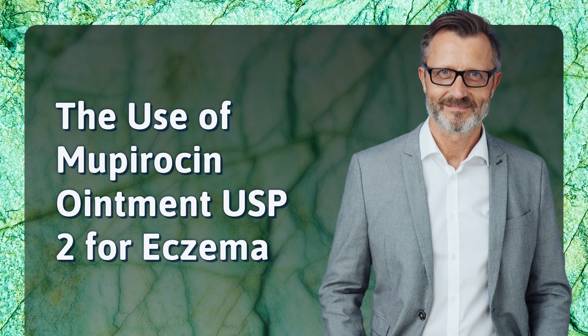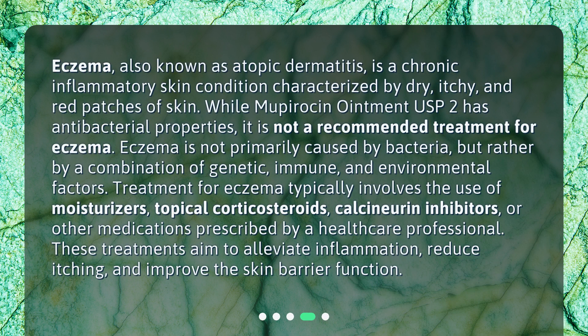The use of Mupiracin Ointment USP2 for eczema: Eczema, also known as atopic dermatitis, is a chronic inflammatory skin condition characterized by dry, itchy, and red patches of skin. While Mupiracin Ointment USP2 has antibacterial properties, it is not a recommended treatment for eczema. Eczema is not primarily caused by bacteria, but rather by a combination of genetic, immune, and environmental factors. Treatment for eczema typically involves the use of moisturizers, topical corticosteroids, calcineurin inhibitors, or other medications prescribed by a healthcare professional. These treatments aim to alleviate inflammation, reduce itching, and improve the skin barrier function.